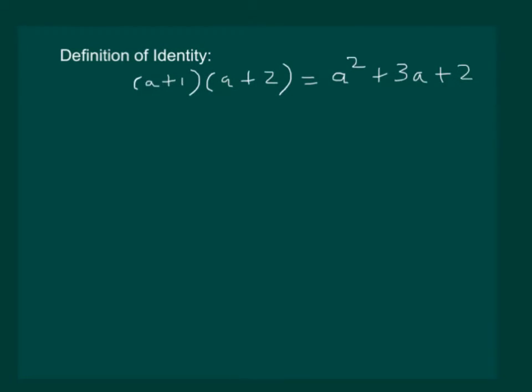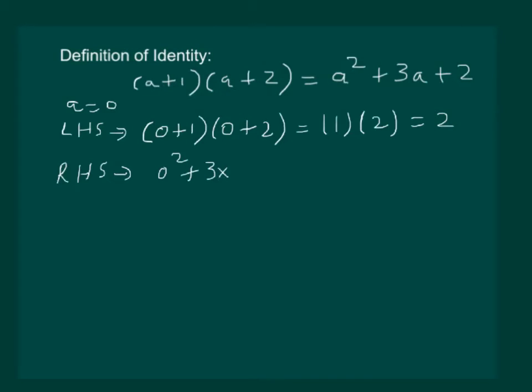Let me take a = 0 and calculate the left hand side. It will be (0+1)(0+2) which is same as 1 into 2 that is equal to 2. Now let me substitute in the right hand side: 0² + 3×0 + 2 which comes out to be 0 + 0 + 2 which is equal to 2. Hence we can see that for a = 0, left hand side is equal to right hand side.